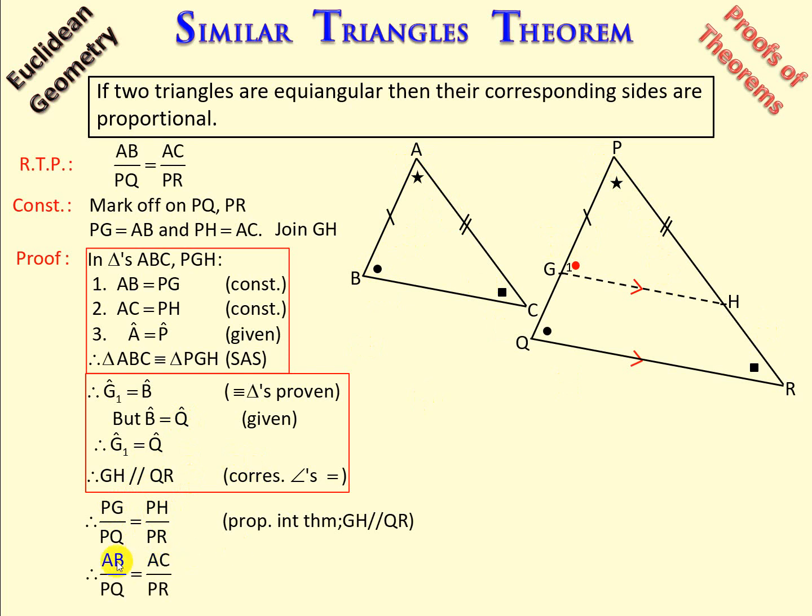So, now I have AB over PQ is equal to AC over PR. And we've proved that if two triangles are equiangular, then the corresponding sides are in proportion.